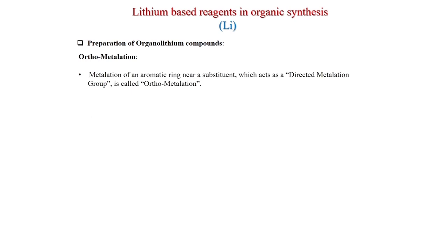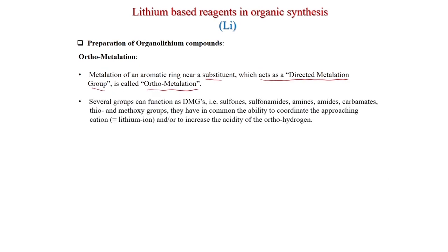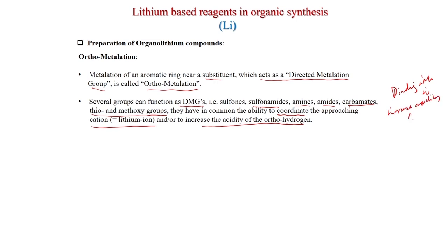Preparation of orthometallation: metallation of an aromatic ring near a substrate group that acts as a directed metallation group (DMG) is called orthometallation. Several groups can function as DMGs, such as sulfones, sulfonamides, amines, amides, carbamates, thio, and methoxy groups. They have in common the ability to coordinate the approaching lithium cation and/or to increase the acidity of the ortho hydrogen, thus facilitating binding with lithium and increasing C-H acidity.